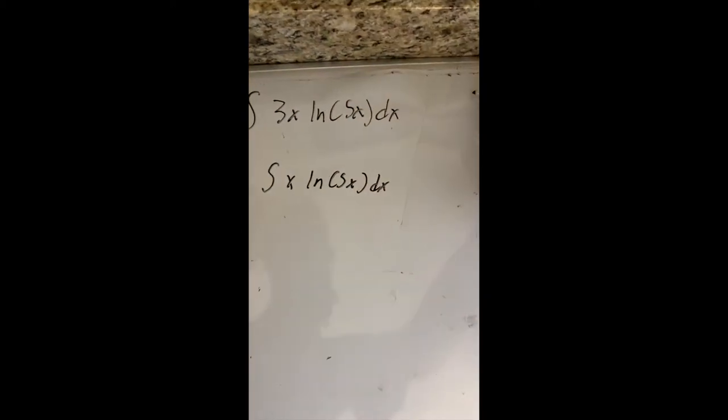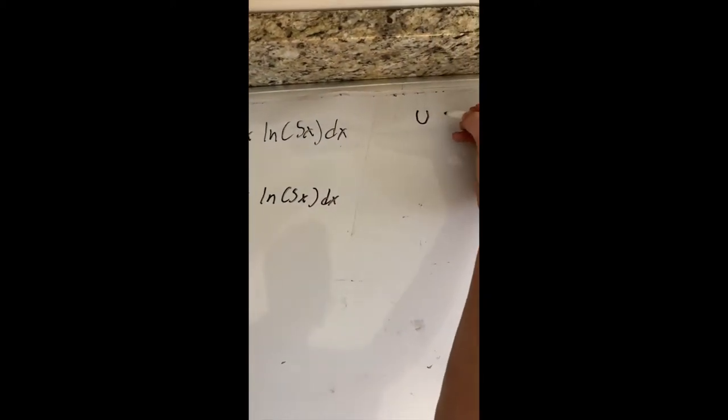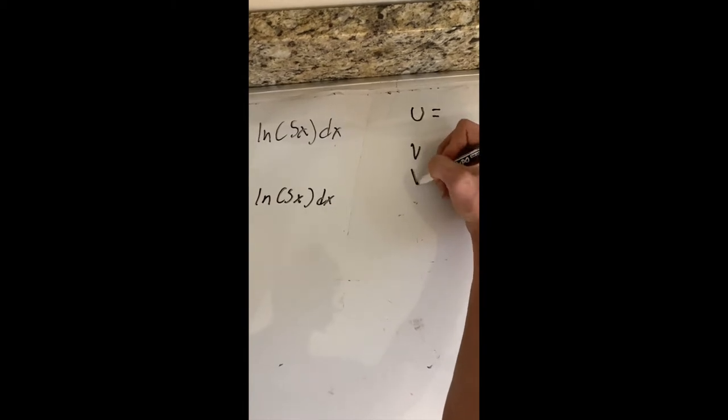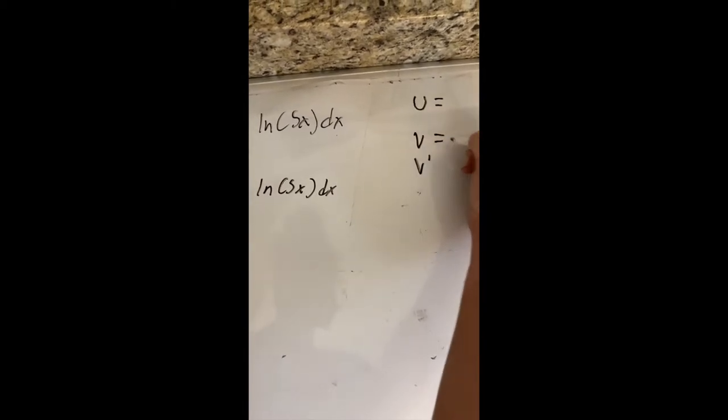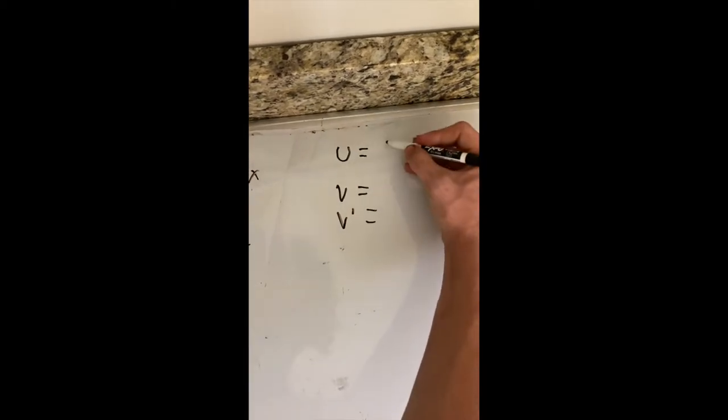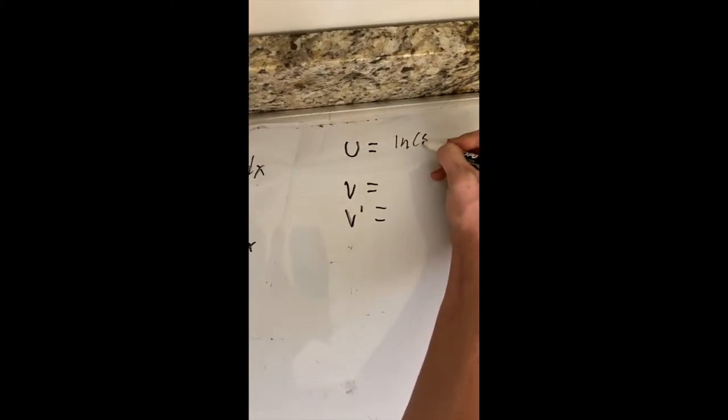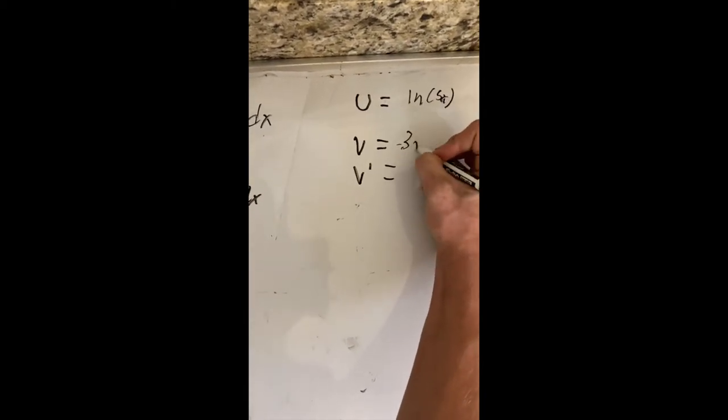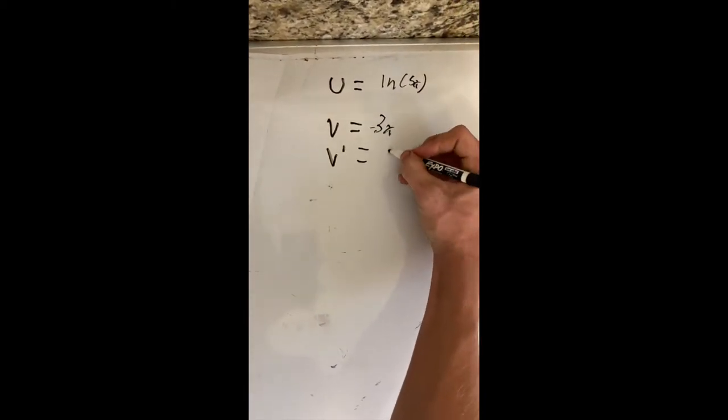And then you do integration by parts. You want a u and v and v prime. Okay, first I'm going to have u be ln 5x. And then v is going to be 3x. So that would make v prime x.